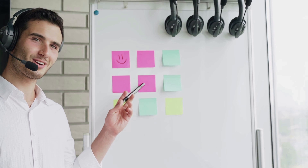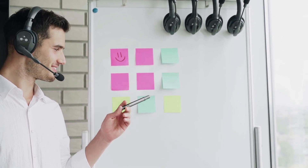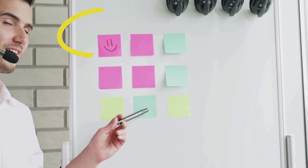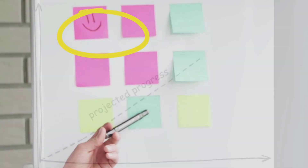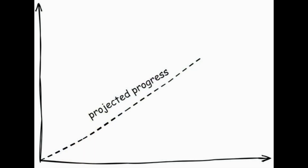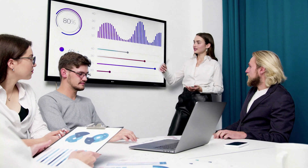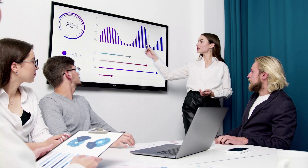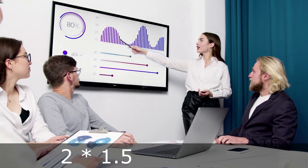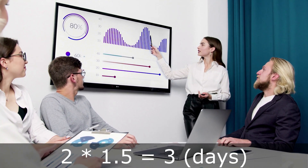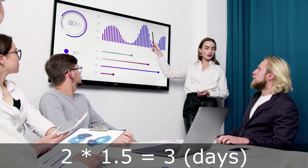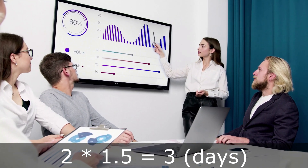The corrective factor approach is based on the fact that, as a rule of thumb, developers give an optimistic estimation. To tackle the mistake, we simply multiply the provided estimation by a certain corrective factor. For example, if we estimated a task would take two days and the corrective factor is 50%, our final estimation will be three days. The trick is to choose a corrective factor that would statistically be more or less accurate for a particular product, environment, and team.